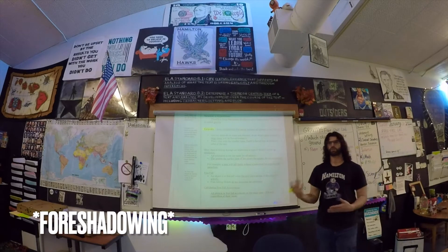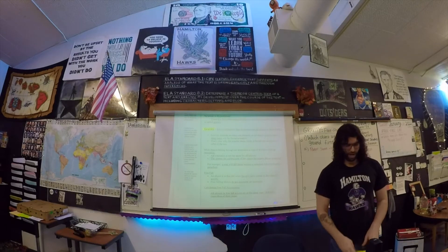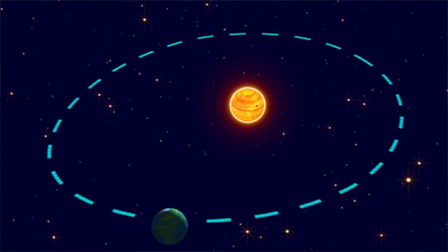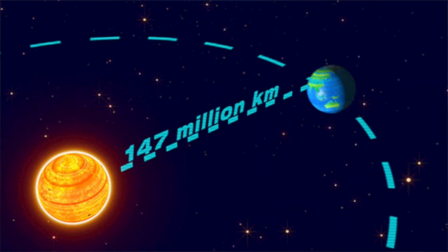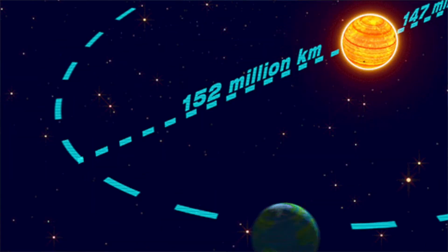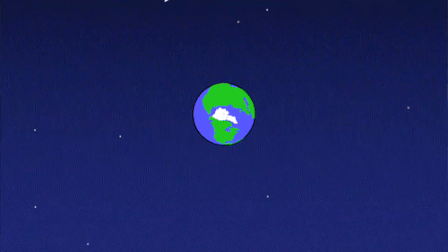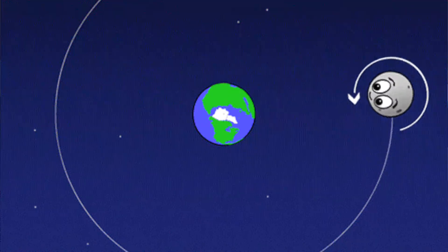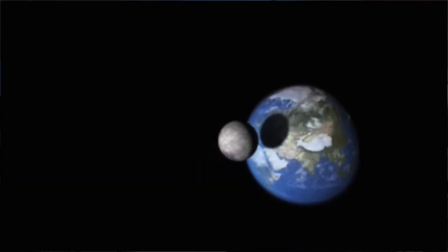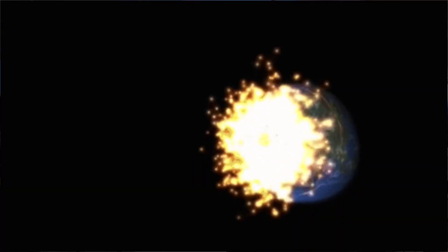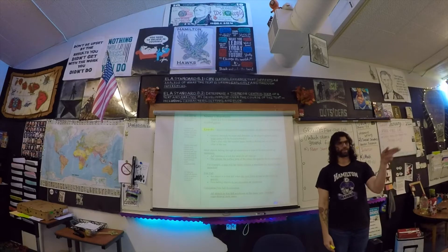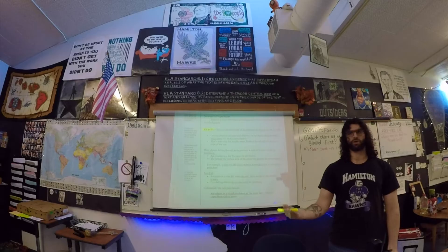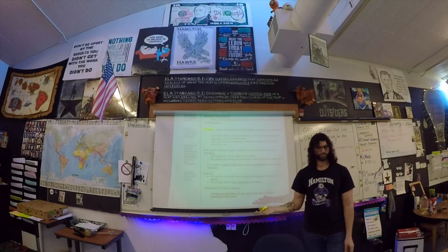I'm going to make this into a video we're going to watch tomorrow. Moving on — gravity depends on mass and distance. The earth is not super close to the sun, but it orbits the sun because it's still at a certain distance where it's still affected by gravity. The moon is orbiting around the earth because it's affected by the gravity of the earth, but it doesn't fall towards the earth because it's so far away.